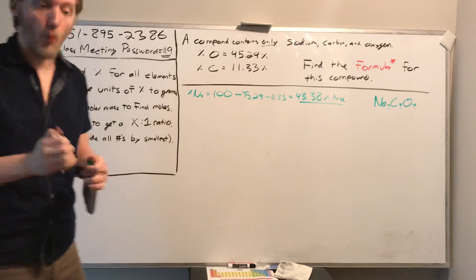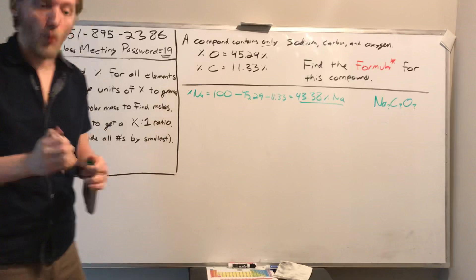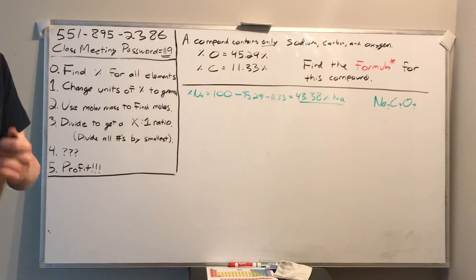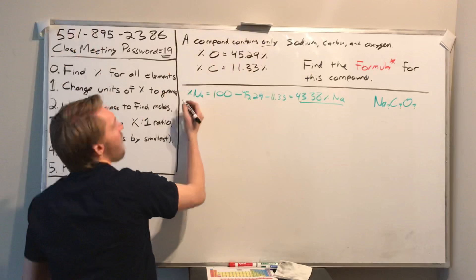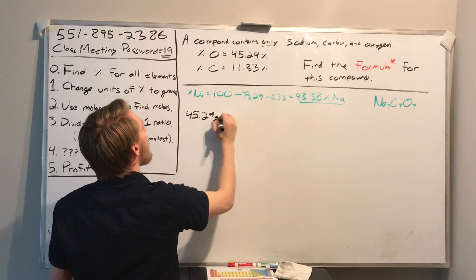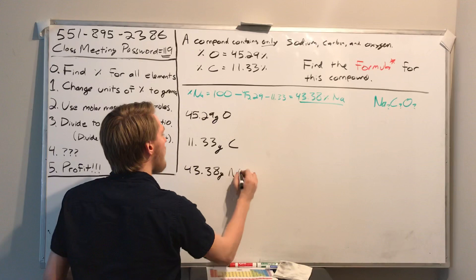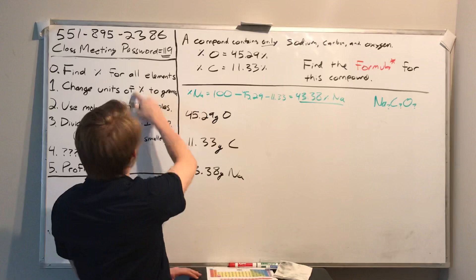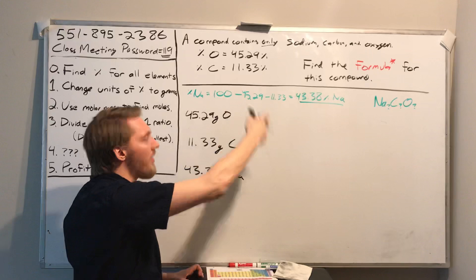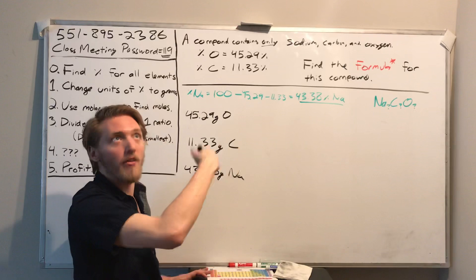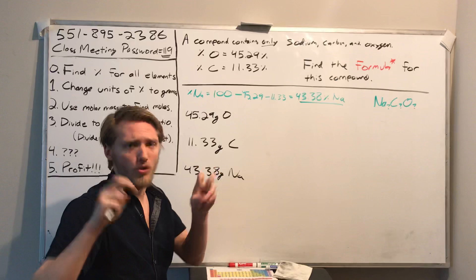Check: 43.38 + 45.29 + 11.33 should equal 100% — yes. So now I have my full percent composition. Step one: change percentages to grams. We get 45.29 grams of oxygen, 11.33 grams of carbon, and 43.38 grams of sodium, imagining a 100-gram sample.